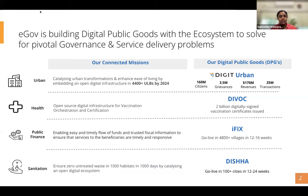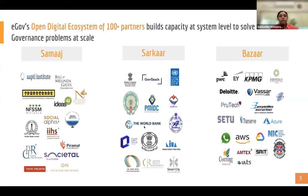eGov is building digital public goods. We've got four primary domains that we work in: Urban, Health, Public Finance, and Sanitation. We have a lot of partners and we are trying to build an ecosystem of partners who will build on top of DIGIT. These four domains were conceived by eGov, but we want to invite you all to imagine other domains on top of DIGIT.